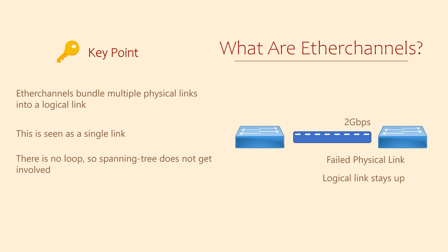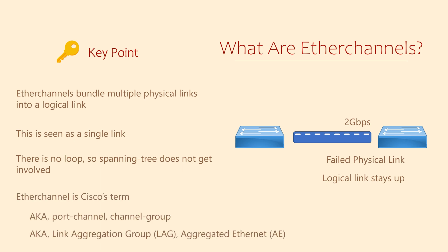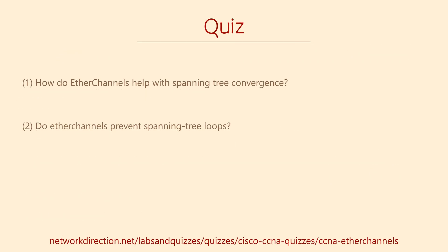Before moving on, there are a couple of things I'd like to briefly mention. Firstly, EtherChannel is a Cisco term — they also call it a port channel or channel group, as these are the commands used in configuration. Other vendors will use terms like LAG, which is Link Aggregation Group, or perhaps AE, which is short for Aggregated Ethernet. Despite the different names, these are all standards-based, so you can configure an EtherChannel on a Cisco switch and connect it to a LAG on another vendor's switch and it will all work just fine.